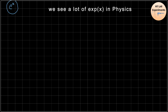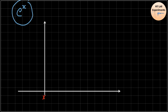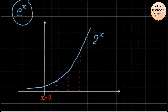To understand this, first we will discuss a little bit about exponential functions. Exponential functions are used to explain growth. Consider at x=0 there is some quantity which is 1; at x=1 it doubles to 2; at x=2 it doubles again to 4; at x=3 it becomes 8. If you plot this you get a curve which you can write as 2 raised to the power x.